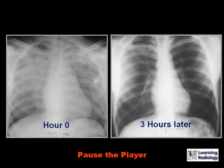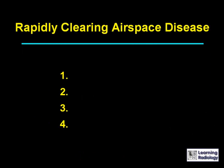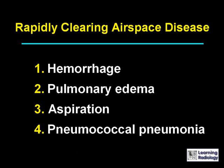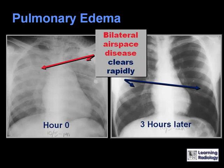This is the next differential: rapidly clearing airspace disease. There are four causes: hemorrhage, pulmonary edema, aspiration, and pneumococcal pneumonia.